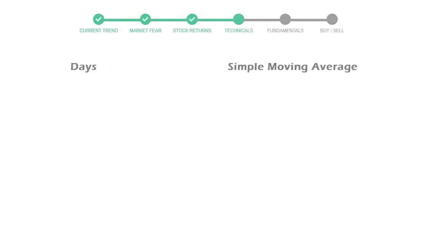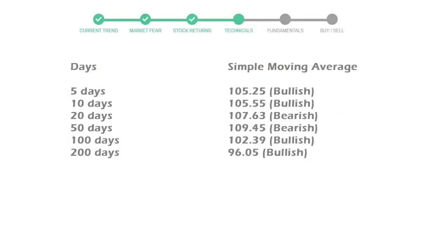Now let's have a look at simple moving average data. The 5-day average for Merck is moving with 105 towards a bullish indication.